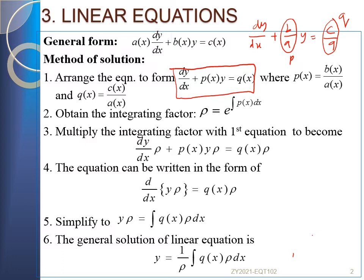The second step is to obtain the integrating factor, which we call rho (ρ). The integrating factor is defined as rho equals e raised to the power of the integral of P(x) dx — that is, rho equals e^(∫P(x)dx), where P(x) is the coefficient of y.